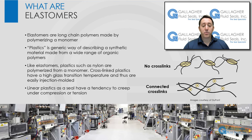The biggest problem with using linear plastics as a seal is the tendency to creep under compression or tension. This will result in eventual leakage of the gasket or seal unless some provision is made for energizing seal surfaces.